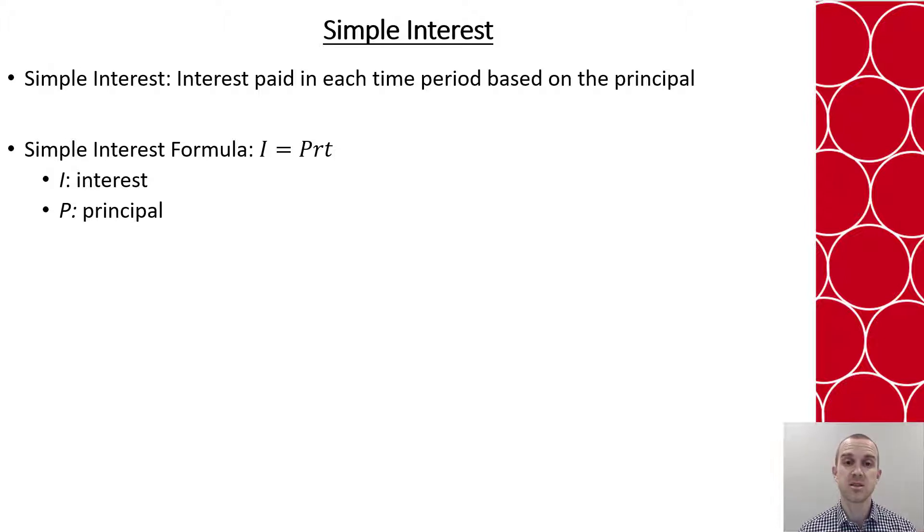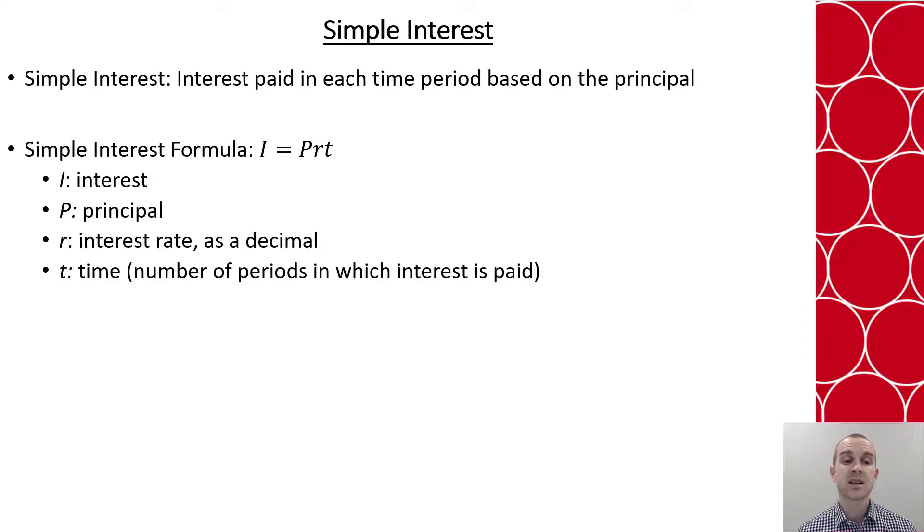I is for the interest that is accrued during the term of the investment or the borrow. P is our principal, that original amount. r will be the interest rate provided, and that needs to be converted from a percent to a decimal. And remember we do that by dividing by 100.